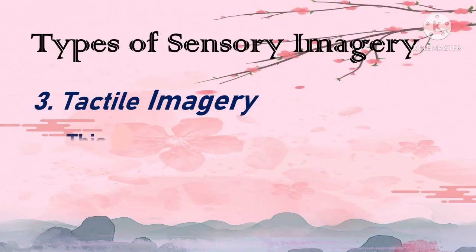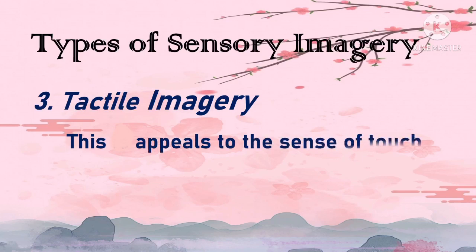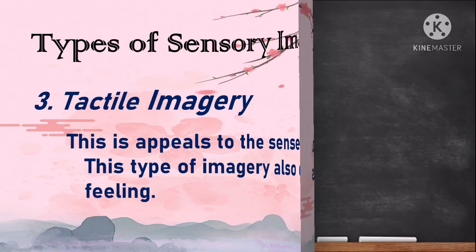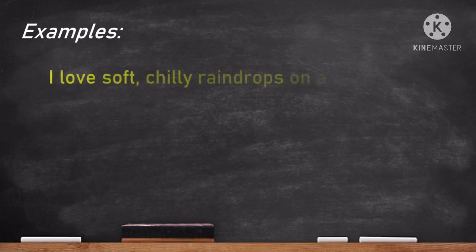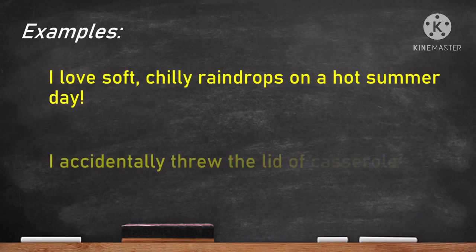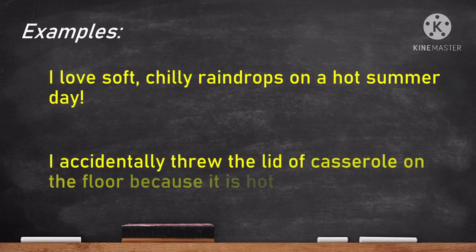Another type is tactile imagery. This appeals to the sense of touch and also describes feeling. Examples: 'I love soft, chilly raindrops on a hot summer day.' 'I accidentally threw the lid of the casserole on the floor because it was hot.'